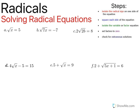Once we've done that, we want to isolate the variable, or factor if necessary, and then set each of the factors equal to zero. Then we're going to solve the equation. After that, we want to check for extraneous solutions. Remember that an extraneous solution is any solution that you get when you solve the equation but does not fit within the original problem.